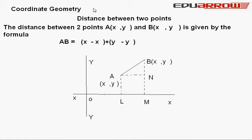The distance between two points A and B. The point A is denoted as (1, 1) and this is the first point denoted by A. The second point B is given by the formula.